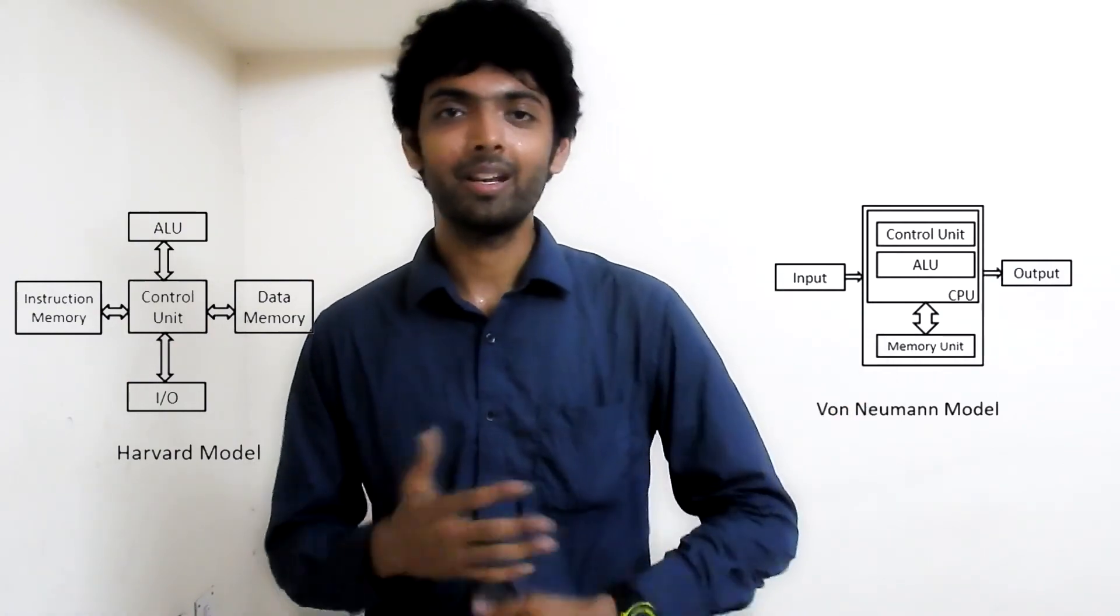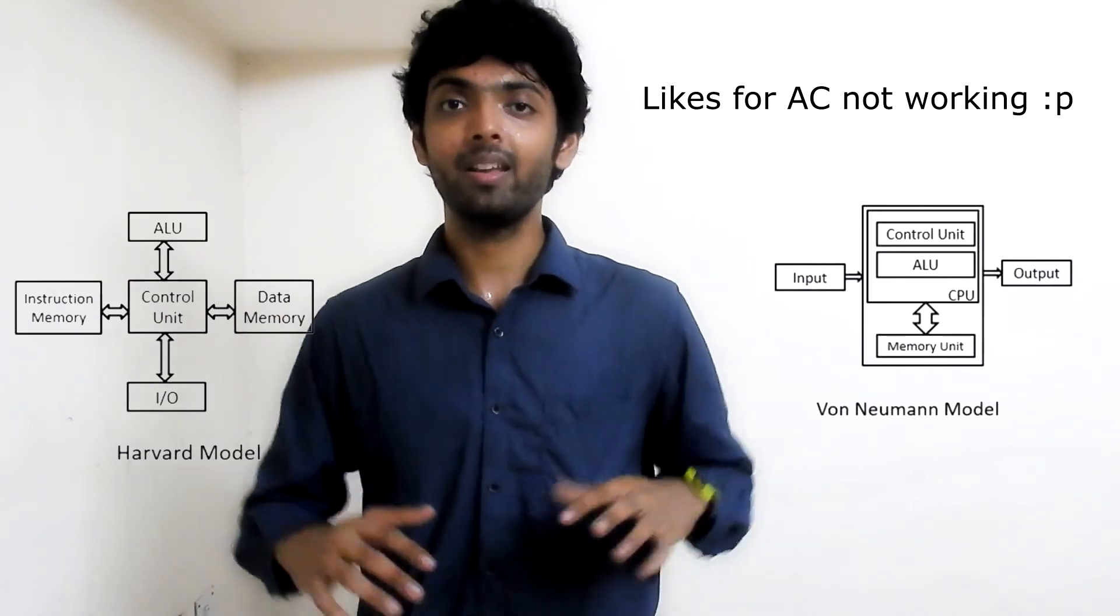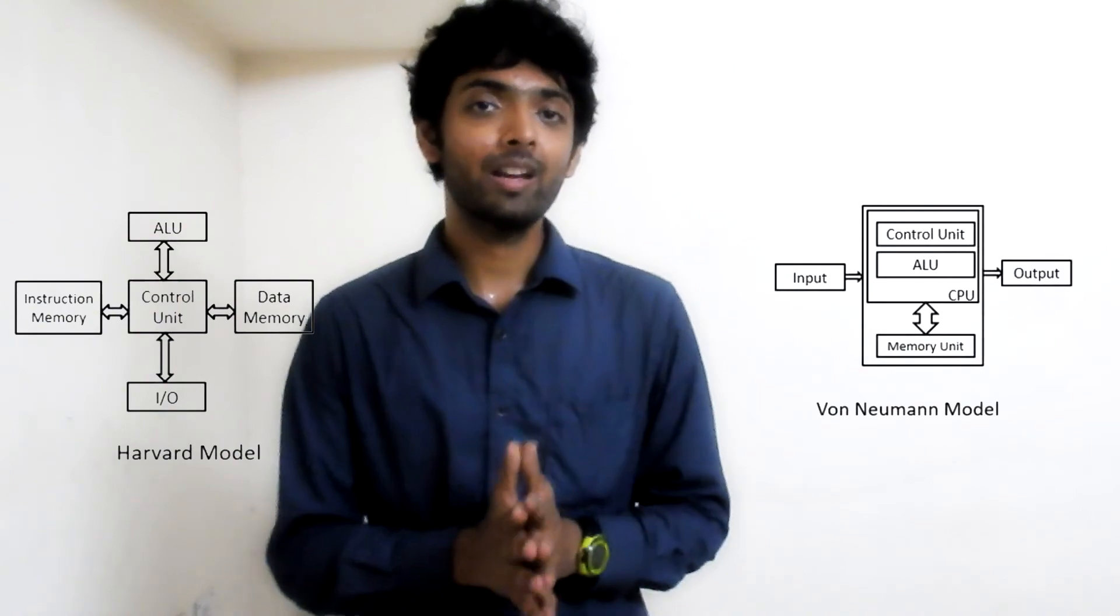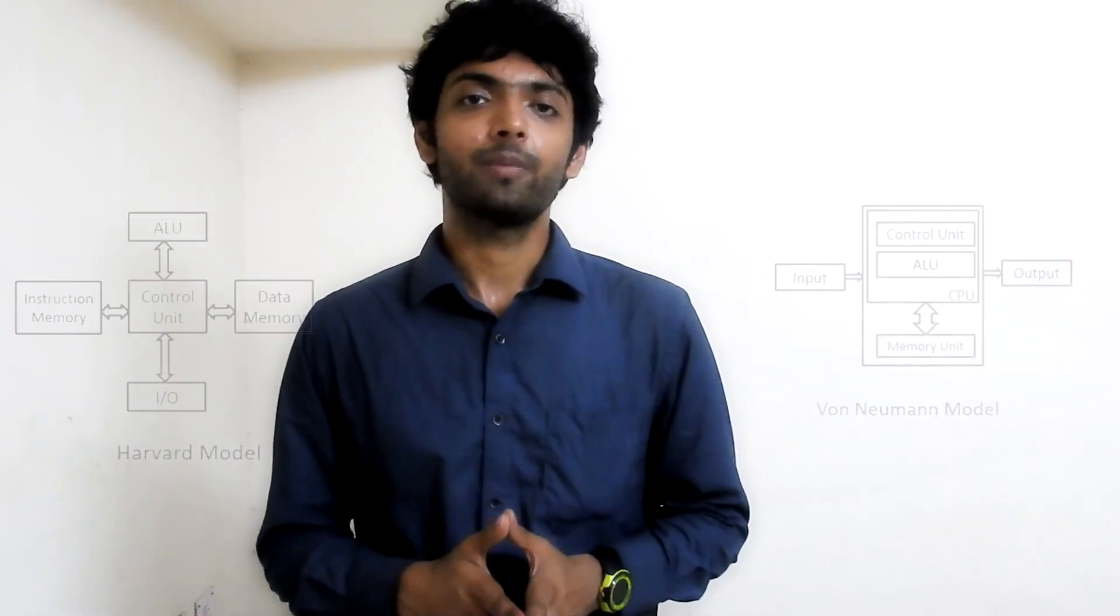Because of this, Von Neumann architecture takes a lot of different clock cycles to solve the problem, but in the case of Harvard architecture, we can pipeline it and it will be more efficient and much faster. This was the difference between Von Neumann architecture and Harvard architecture. Thank you guys.